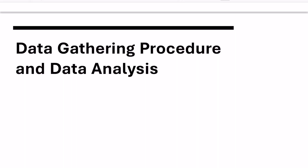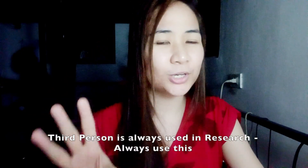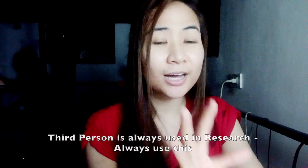The next one would be the data gathering procedure and data analysis. The tip here is that you have to tell it in a storytelling format. Always use the third person — for example: 'The researcher in the study gathered the data using [method], then analyzed it using [statistics].' Use a storytelling format when you present it — like you're just narrating how you conducted your data gathering.